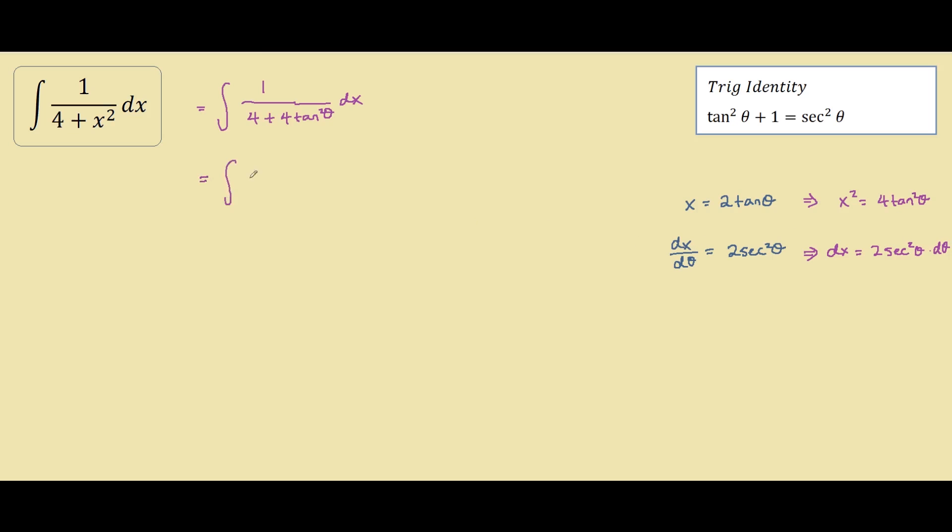So our full integral in terms of theta would be 2 times secant squared theta d theta. Let's factor out the 4 here, so we have 4 bracket 1 plus tangent squared theta.